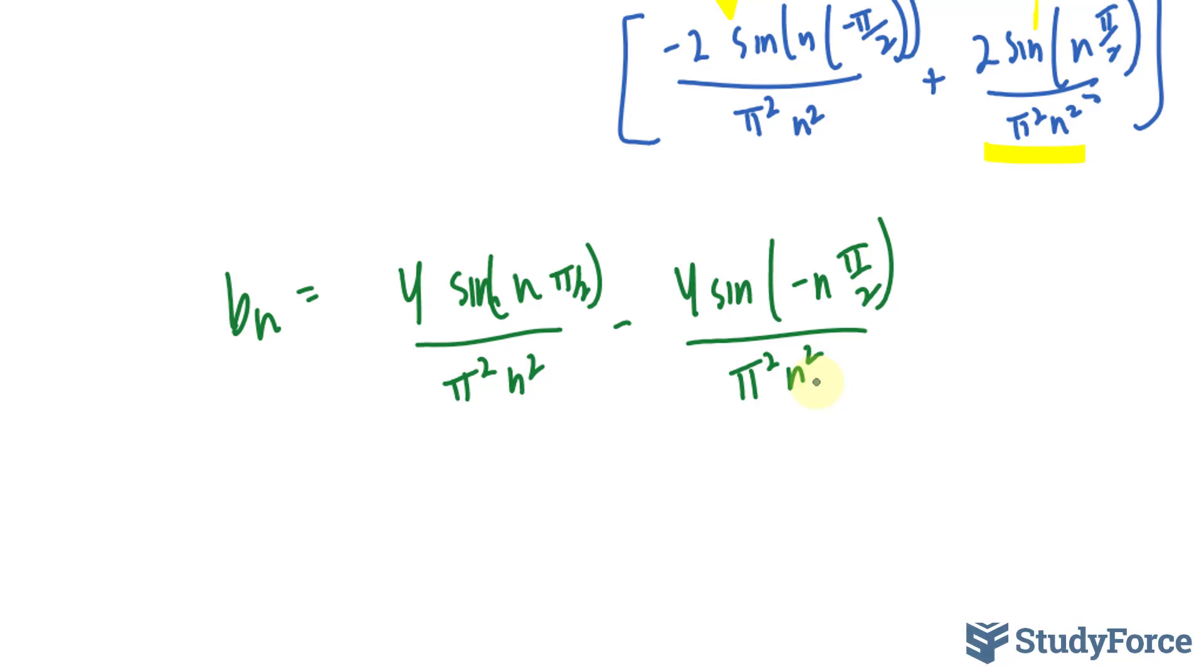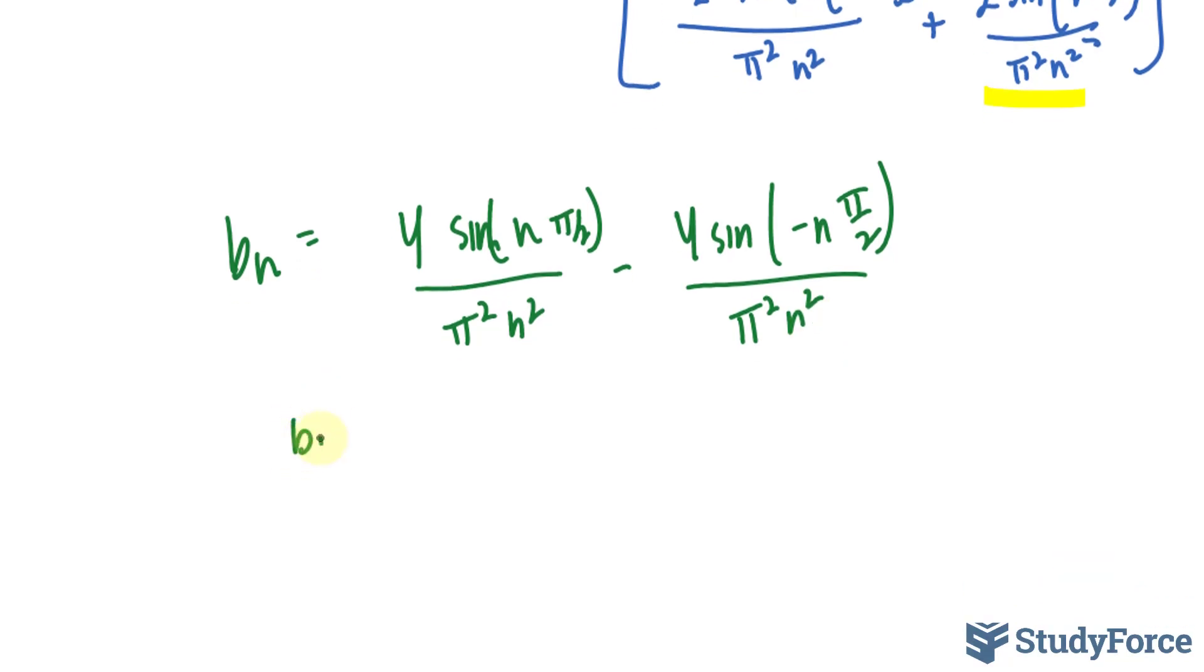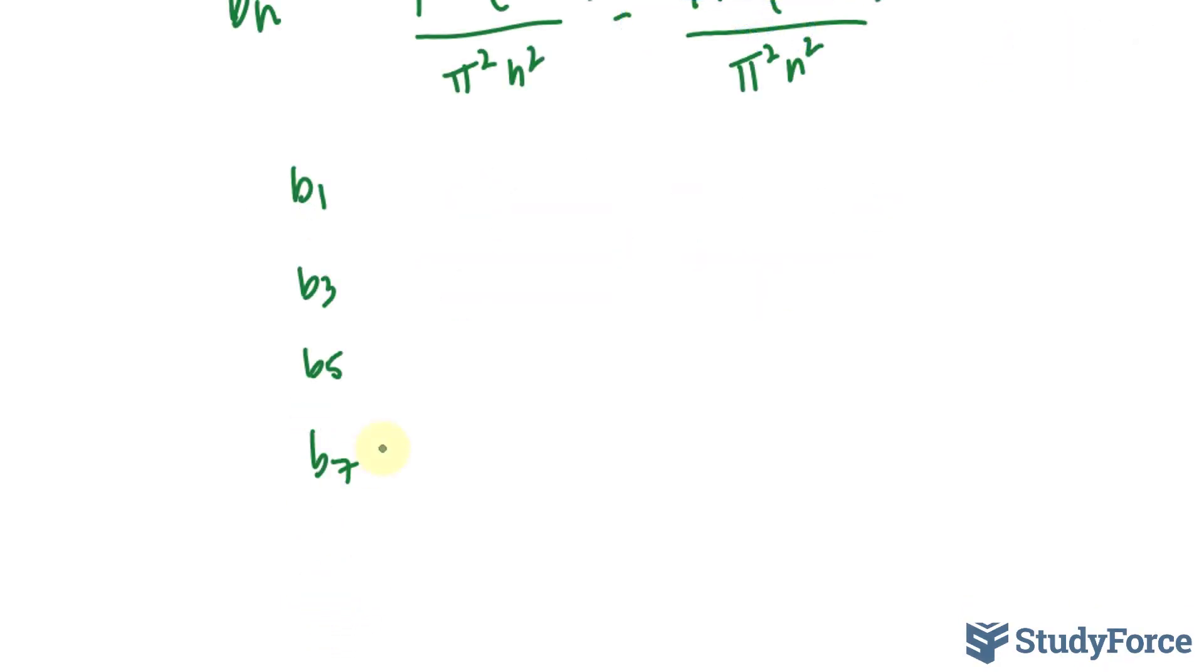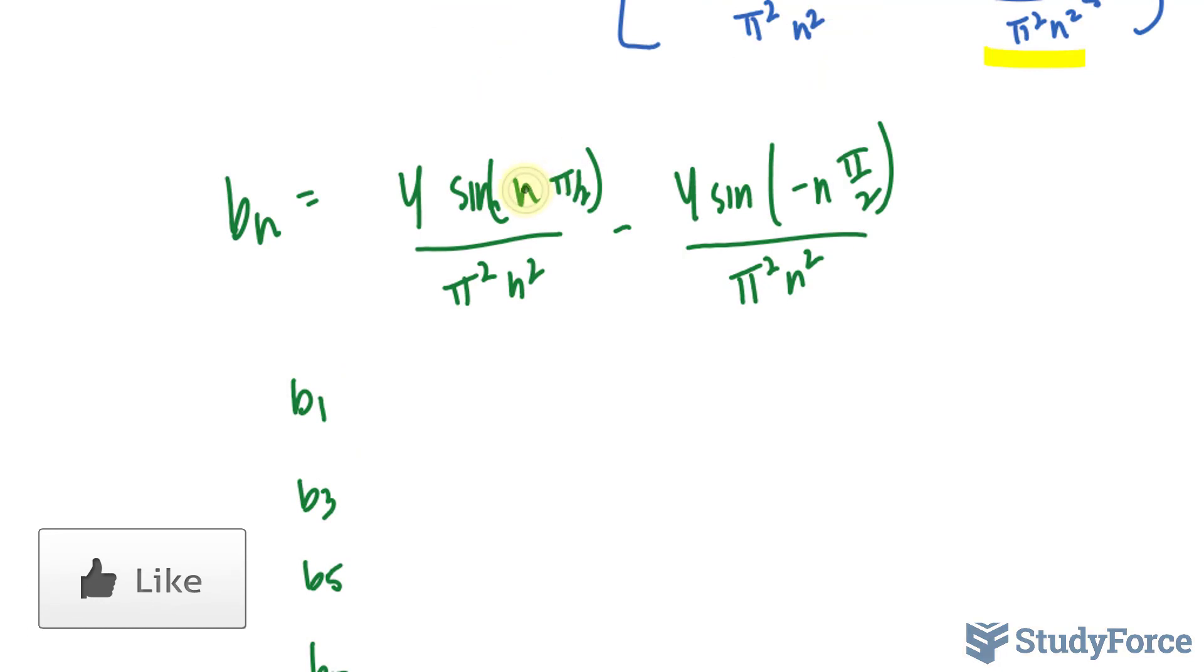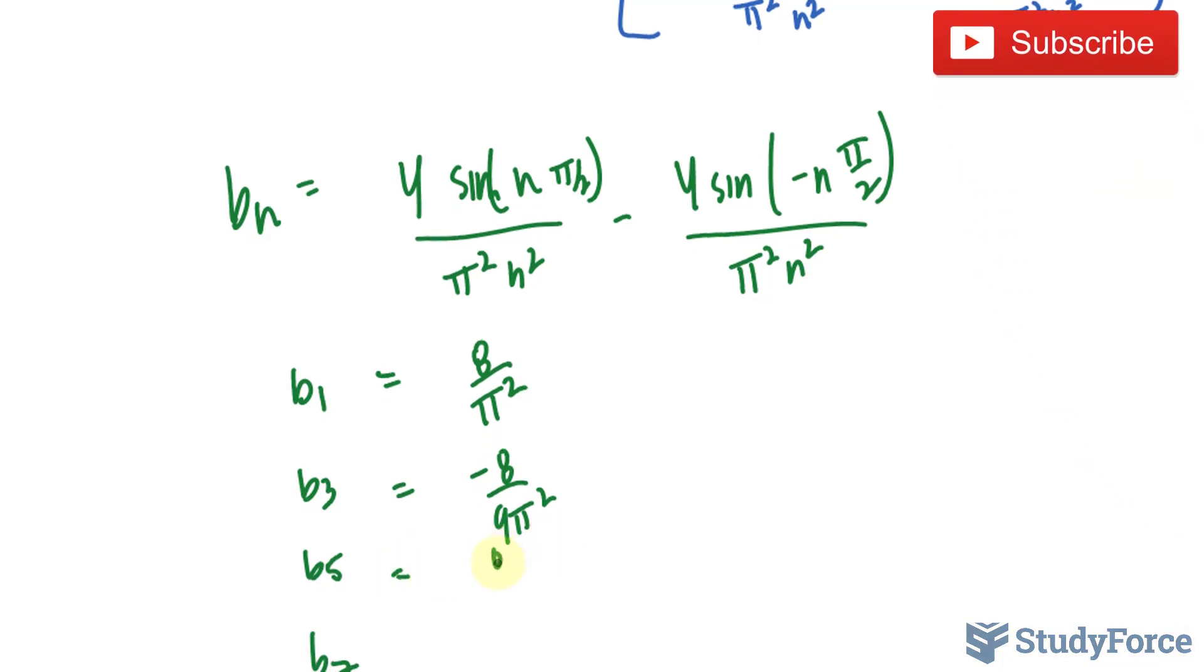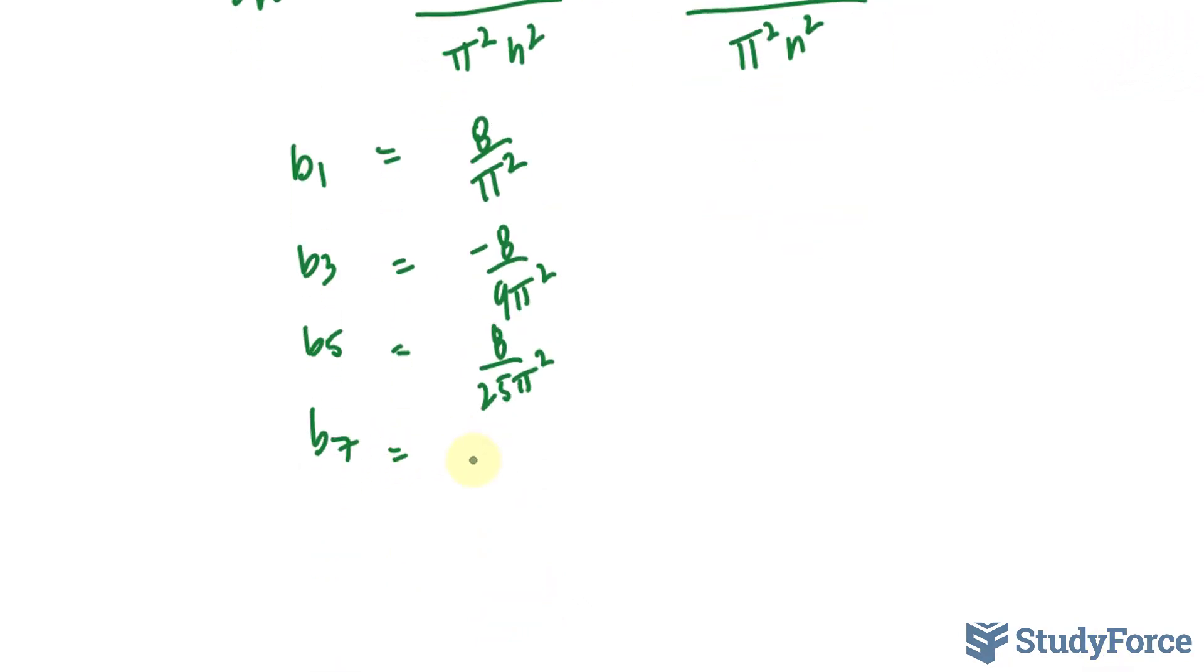We can use this general formula to find b₁, b₃, b₅, and b₇. If I were to substitute 1 into n here and here, I'll end up with 8/π². And you can confirm that by using your calculator. Substituting 3 wherever we see an n will give us -8/(9π²). Substituting 5, we get +8/(25π²). And finally, substituting 7, we get -8/(49π²).